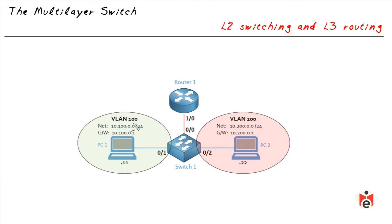On VLAN 100, PC1 has the IP address 10.100.0.11. When PC1 communicates with other devices on the same VLAN and IP network, the switch does a fantastic job of forwarding frames based on the destination layer 2 addresses within that VLAN. But a VLAN is a lot like Vegas — what happens in Vegas stays in Vegas — and that's true regarding local network traffic and broadcasts in the VLAN.